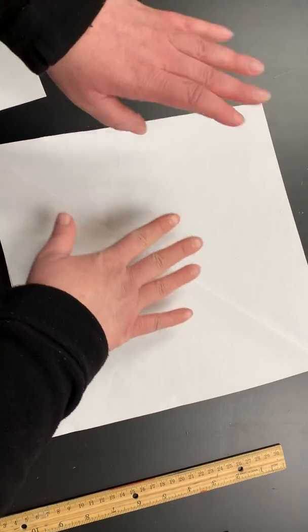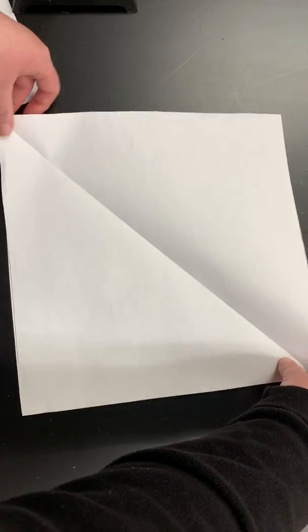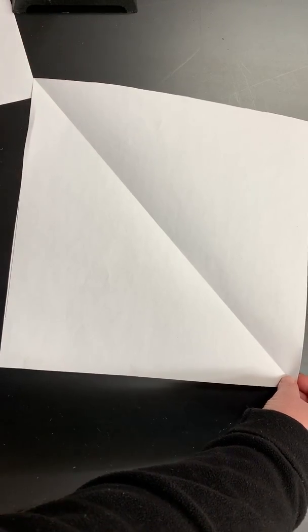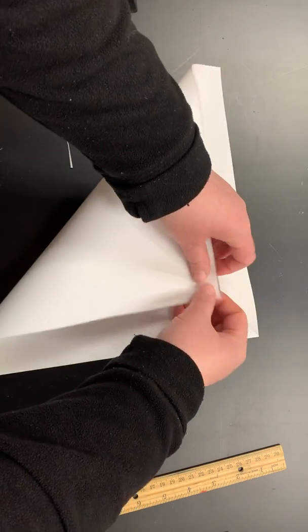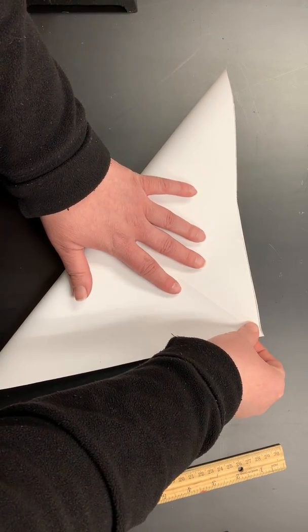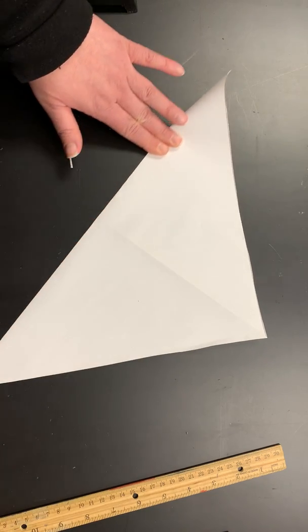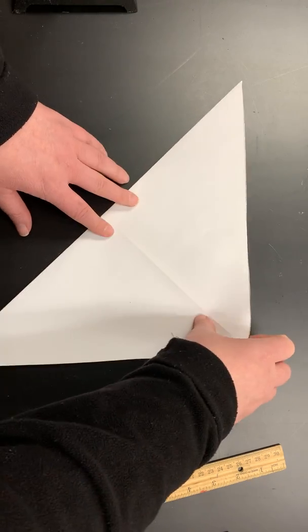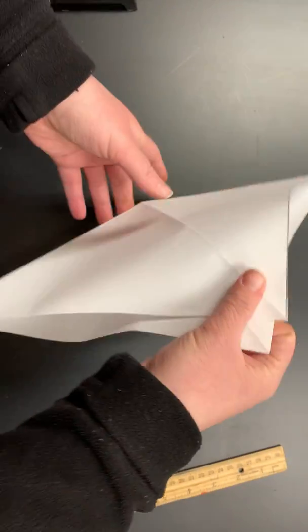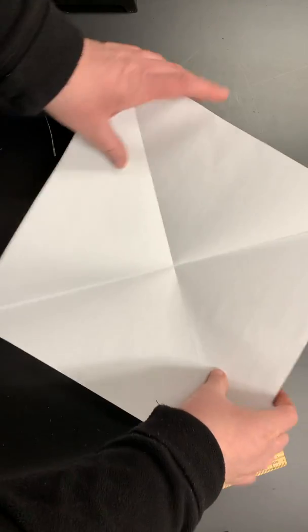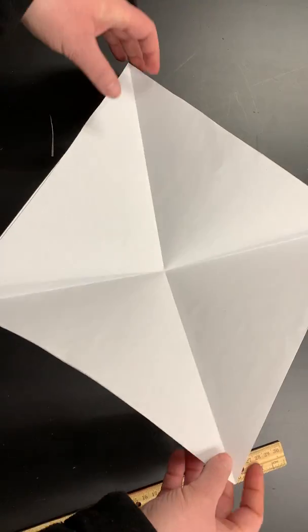We're actually going to create another fold diagonally in the opposite direction. So take your two corners that have the fold on them and fold them together. So now you should have two diagonal folds. Now you can always do it this way if you'd like, but by taking the corners opposite end, you actually have the folds that are all going to come in the center, which makes it easier to stand later.